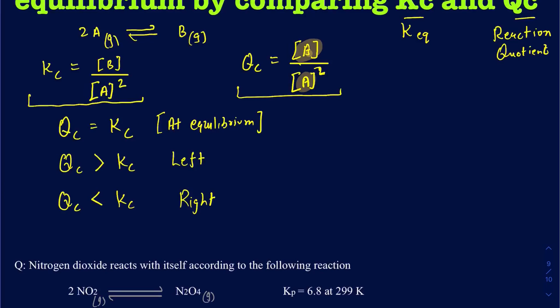At any given chance, if you're only given reactant A, then you'd know this reaction will shift to the right side because you don't really have any product — any B. And similarly, if you're given only B in the beginning, then you know your reaction will shift to the left side. The Qc and Kc concept is used when you have every single product and every single reactant given already, and you don't know whether you are already at equilibrium — that's when you compare your Qc and Kc values.